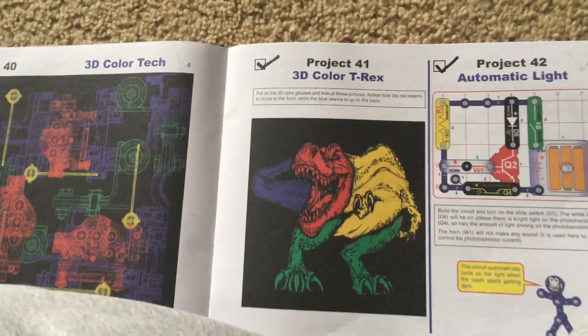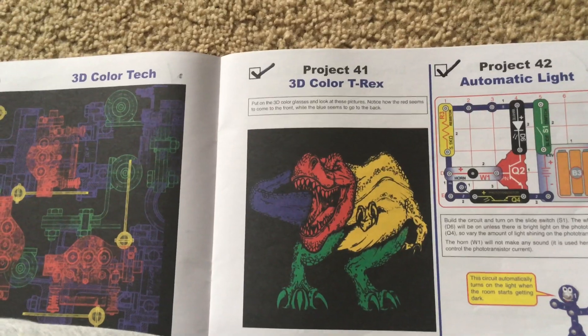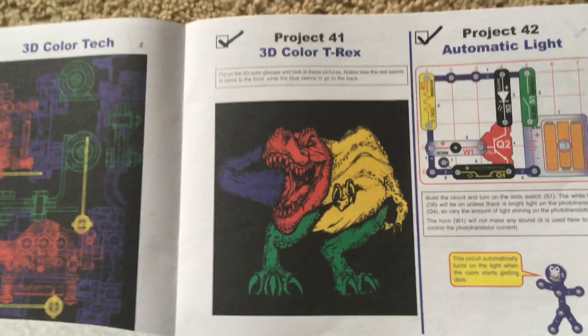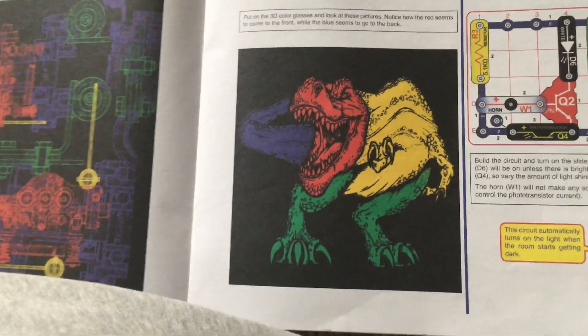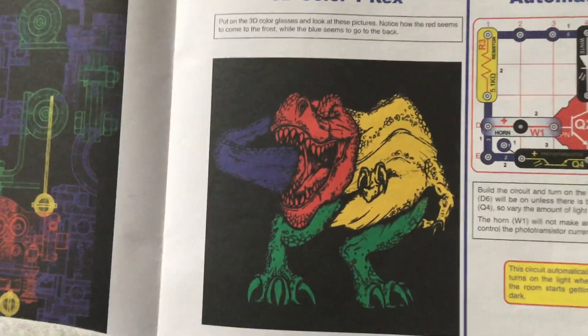The last of the 3D projects for now, Project 41, is 3D Color T-Rex. You will see a picture of a T-Rex in which the body parts are different colors.